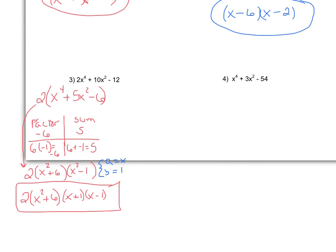Number 4 is a good one for you to pause and try. Now that you had a chance to try one, let's walk through it and see how you did. These numbers can be a little bit more difficult, because now I'm doing factors of -54 with a sum of 3.